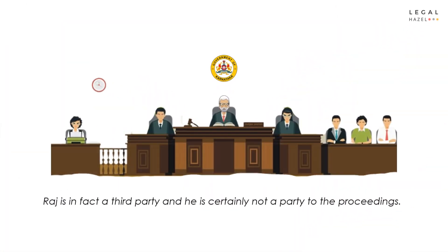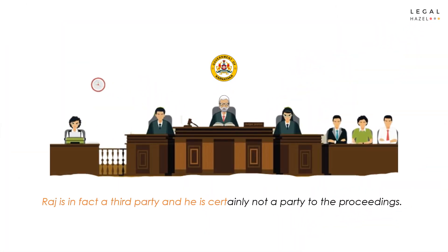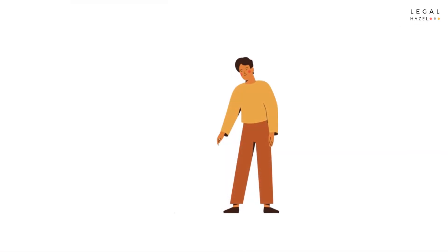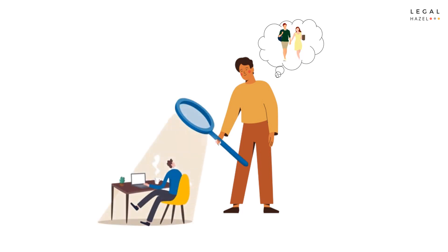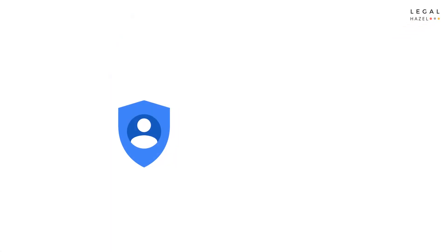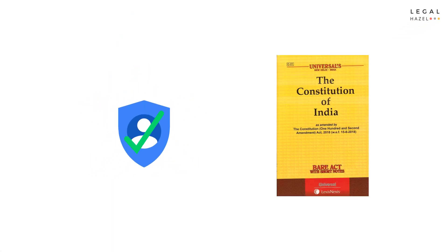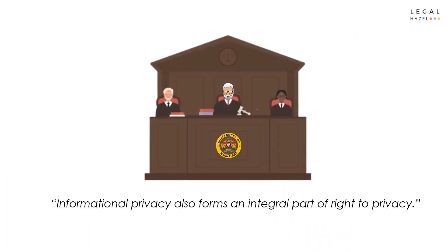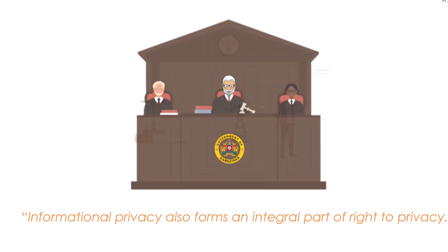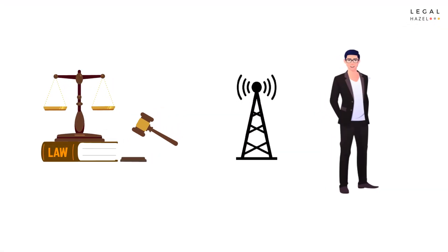The Karnataka High Court observed that Raj is in fact a third party and certainly not a party to the proceedings. It was also observed that the intention of Anil was to prove the illicit relationship of his wife, and therefore a third party's privacy cannot be permitted to be violated. The right to privacy is implicit in the right to life and liberty guaranteed under Article 21 of the Constitution of India. Informational privacy also forms an integral part of the right to privacy. Hence, the order of the family court summoning the mobile tower details was quashed.